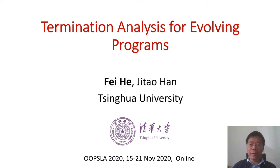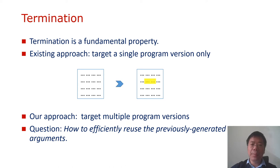Termination is a fundamental property of programs. There is a lot of work on proving termination or non-termination from different angles. However, all existing approaches target a single program version only. Programs are always evolving, and a lot of program versions are produced during its life cycle. We thus address in this paper the termination analysis for evolving programs.